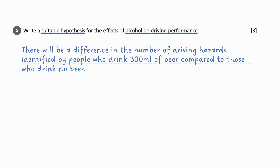So this is what the hypothesis would look like: 'There will be a difference in the number of driving hazards identified by people who drink 300 millilitres of beer compared to those who drink no beer.' You can see the independent variable is whether or not they drink 300 millilitres of beer or no beer, and the dependent variable is the number of driving hazards identified.